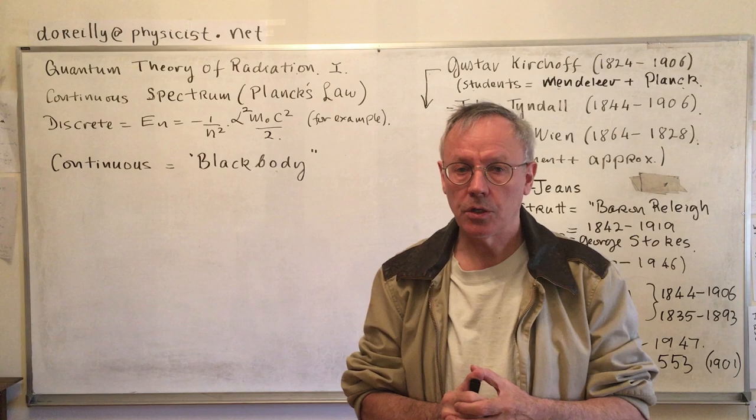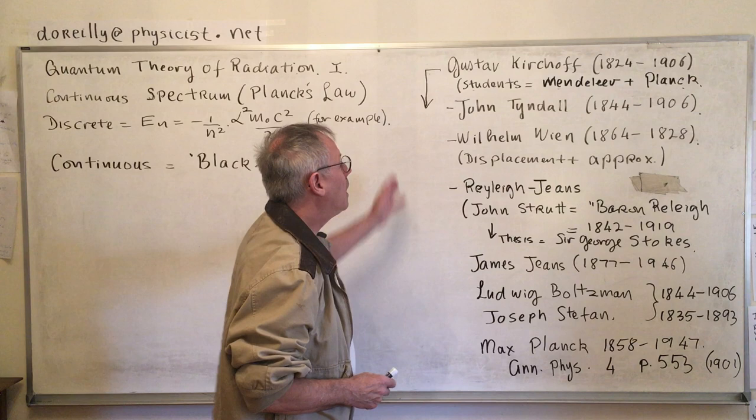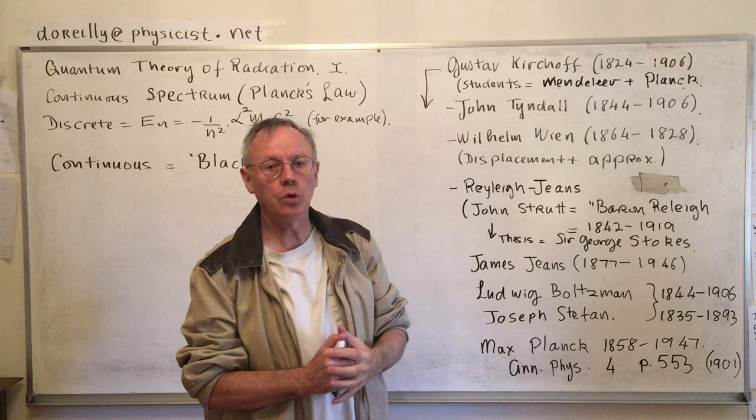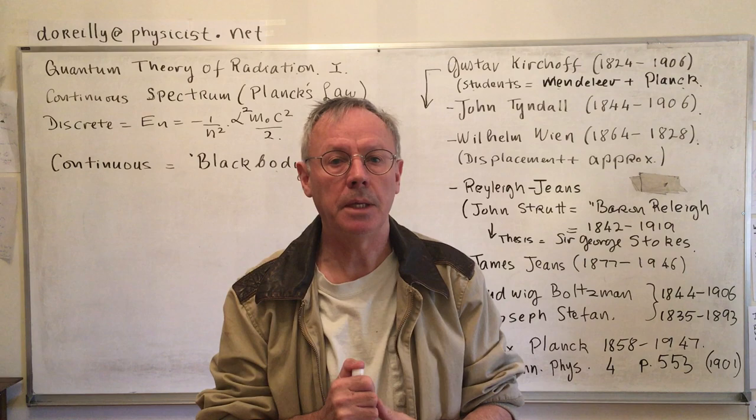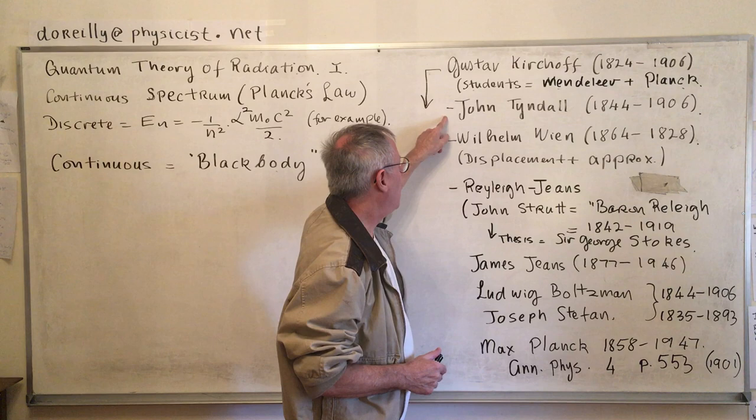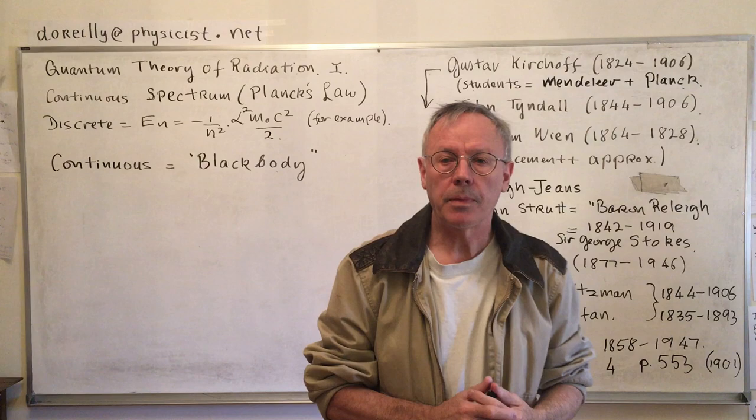One good person to start off with could be Gustav Kirchhoff, who came up with a rule due to equilibrium. He also defined the idea of a black body. Along came Wilhelm Wien, and he came up with two things.